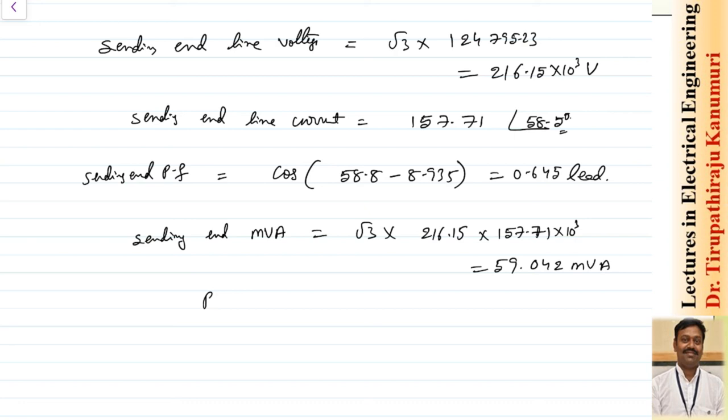The power angle is the angle between the sending-end voltage and the receiving-end voltage, which is 8.935°. I hope the method for calculating ABCD parameters and solving long transmission line problems is now clear. If you still have any queries, please leave your comments in the comment section below and I will answer them. Thank you very much.